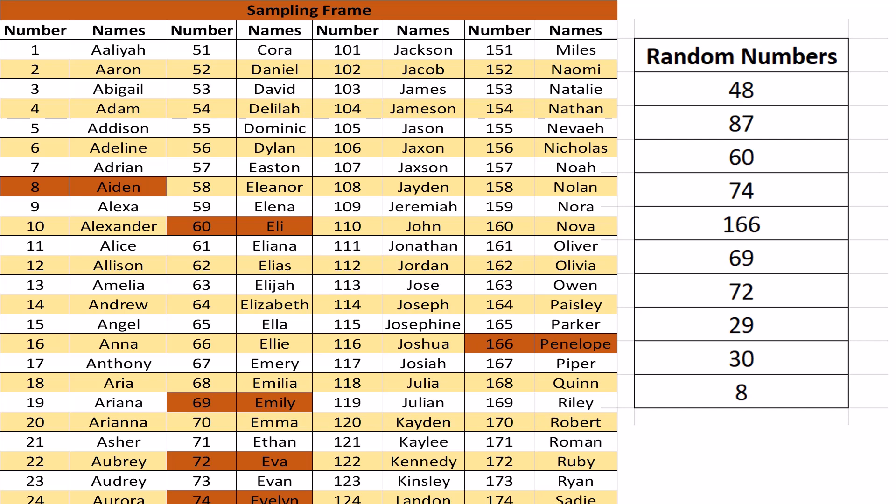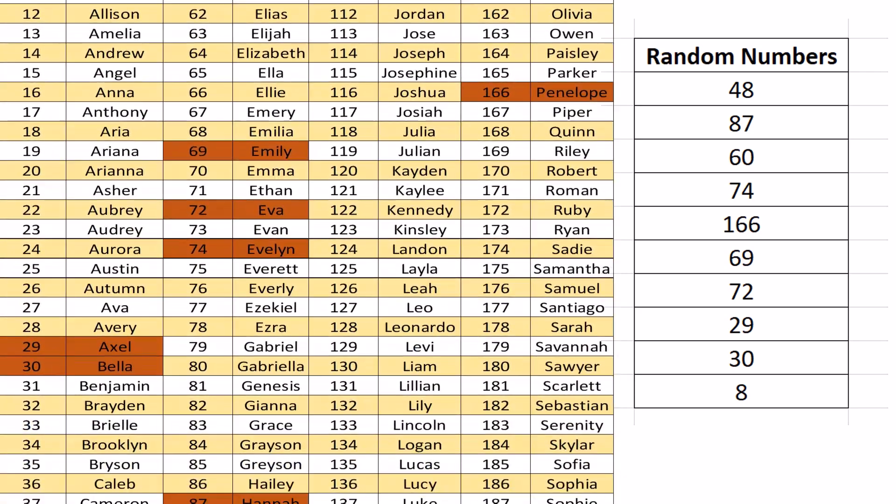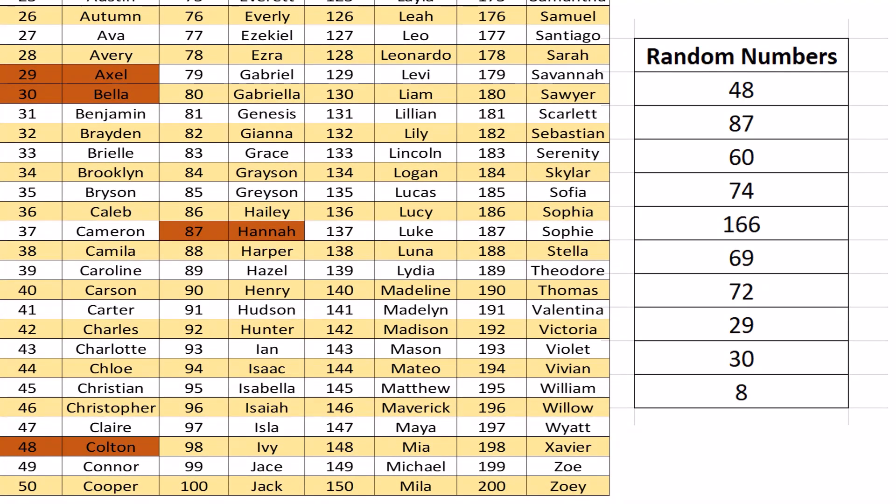In simple random sampling, we list each member of the population and use random numbers to decide which objects are in the sample. Each object is equally likely to be selected. This process produces unbiased sample which we hope is also representative.